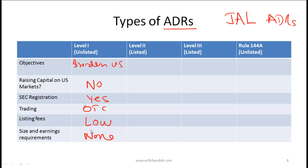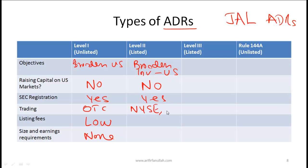A Level 2 ADR also has the objective of broadening the investor base to include US investors, but again does not raise capital in the US market. SEC registration is required. However, trading now includes major stock exchanges such as the New York Stock Exchange and NASDAQ. Listing fees are high because of exchange listing, and size and earnings requirements do exist — so a company must meet a certain threshold to qualify.